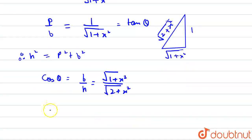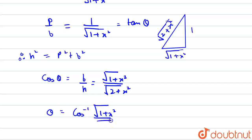So, theta is cos inverse root of 1 plus x squared upon root of 2 plus x squared.